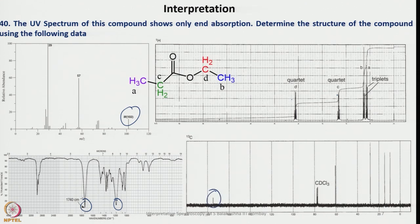So this is how we can use all available information — starting from the nitrogen rule (rule 13), then the hydrogen deficiency index, then looking for heteroatoms, then looking into functional groups such as C=O, NH, or OH — and then we can arrive at the structure and interpret the data obtained from the actual spectrum.